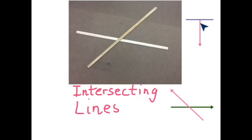So if you were to look at this, these two lines don't cross, but they meet. So they're still considered intersecting lines.